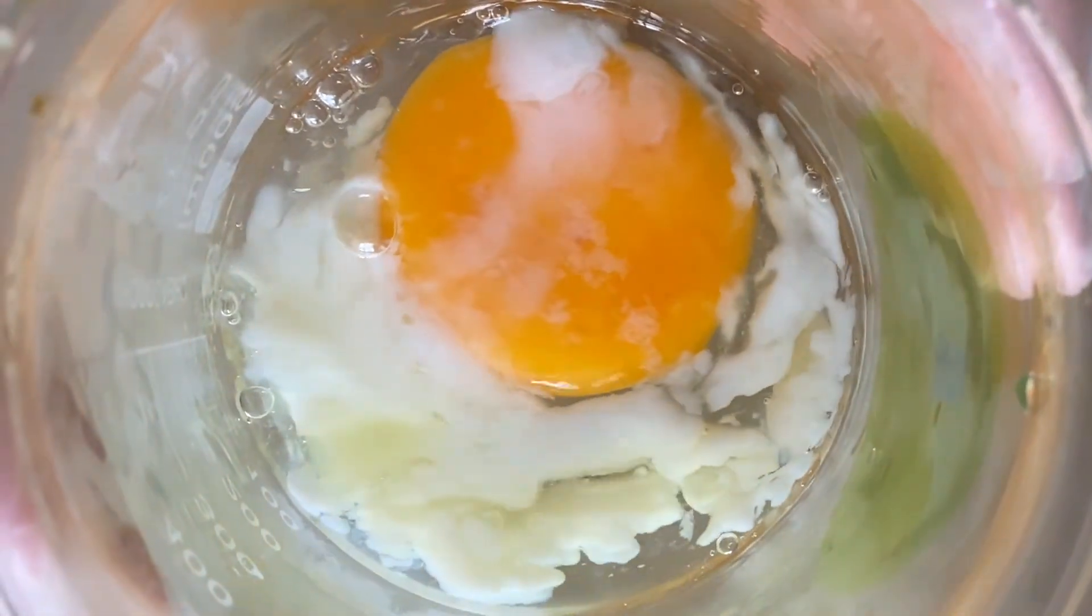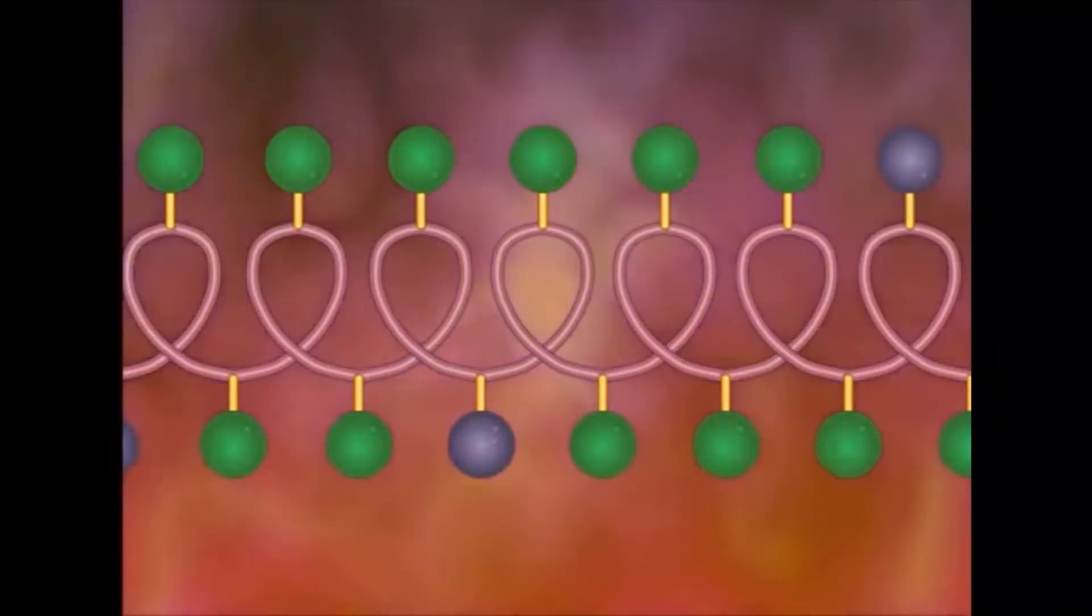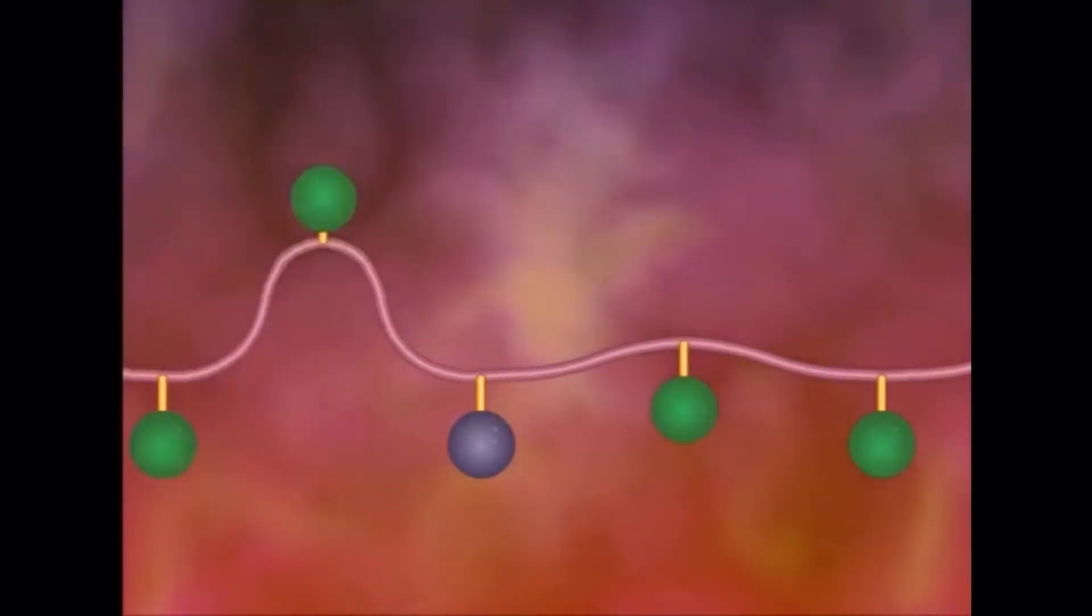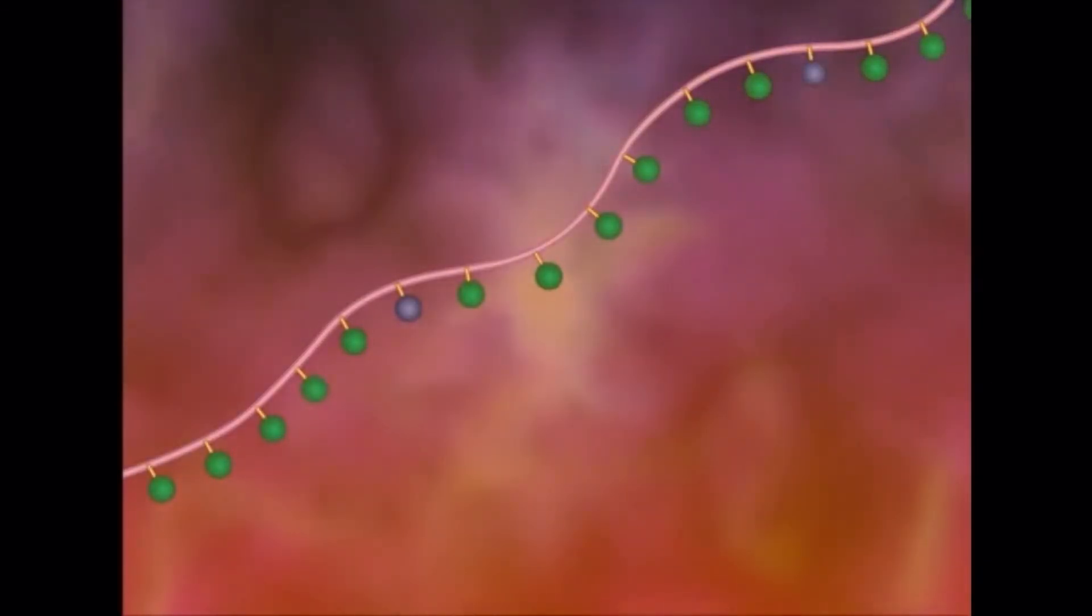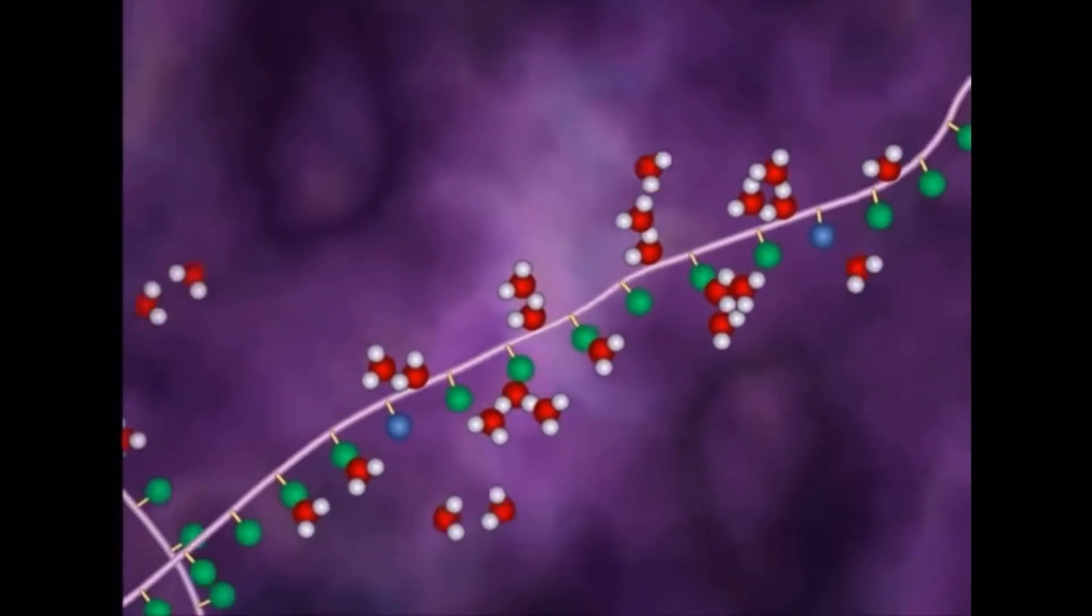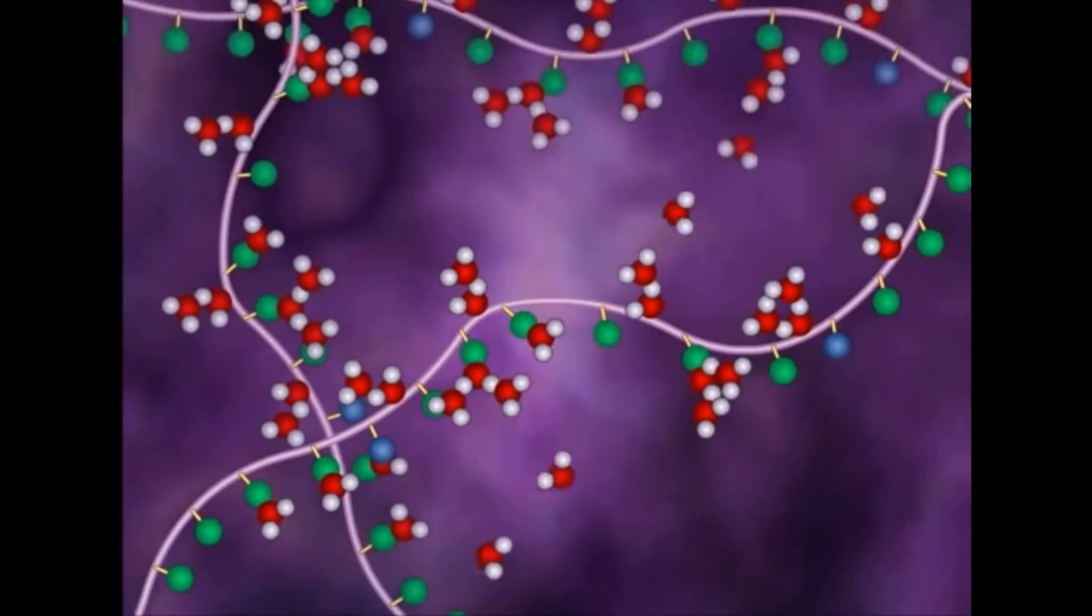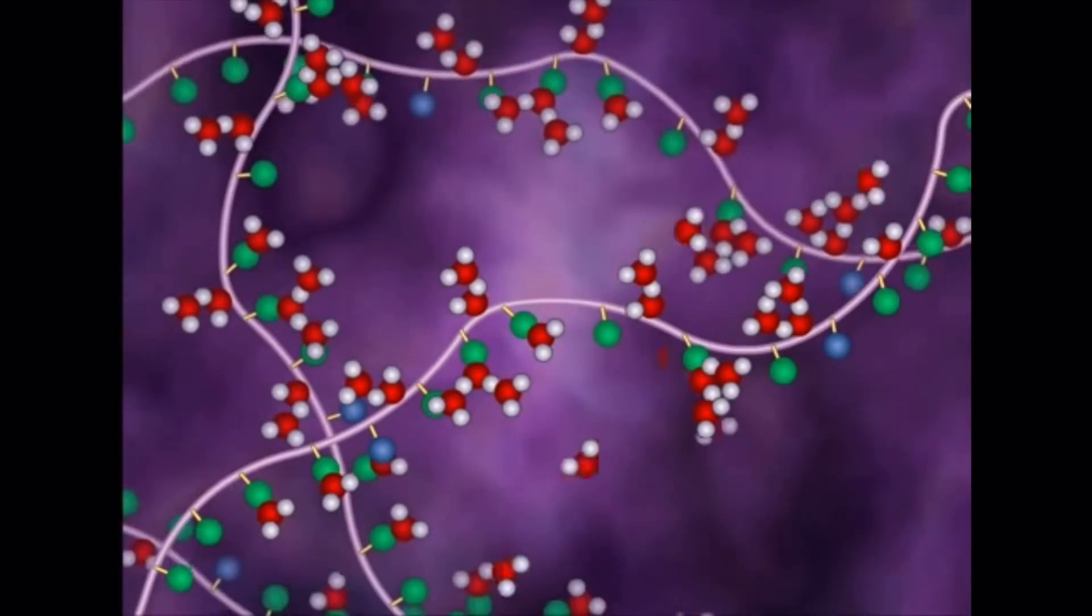Fortunately, I do have a plan B. Eggs are made of protein. What cooking does is that it denatures it by raising the temperature, causing them to entangle with one another. There's another way to denature protein, which is done by changing the pH of its surrounding.